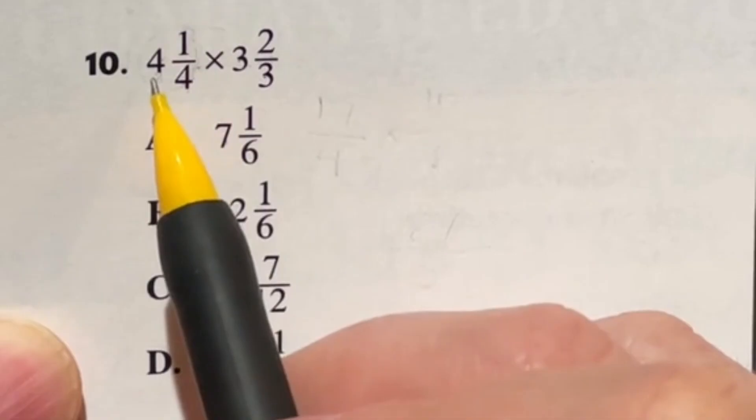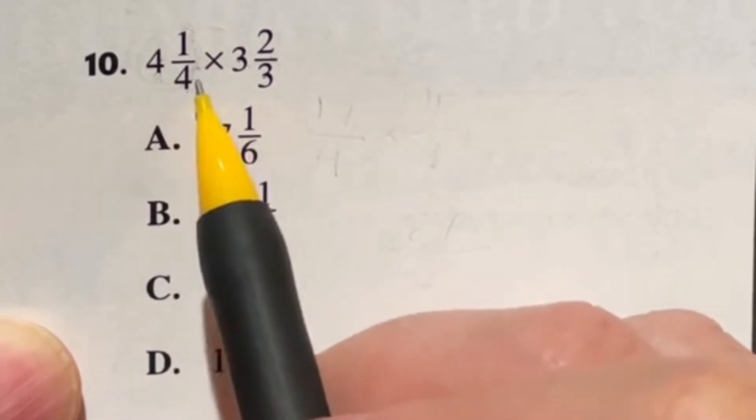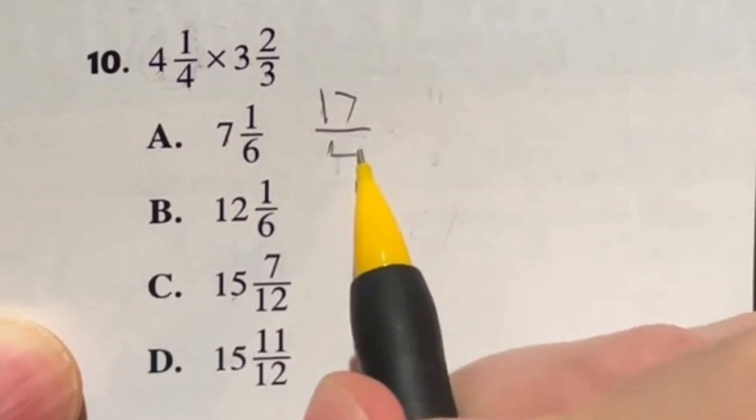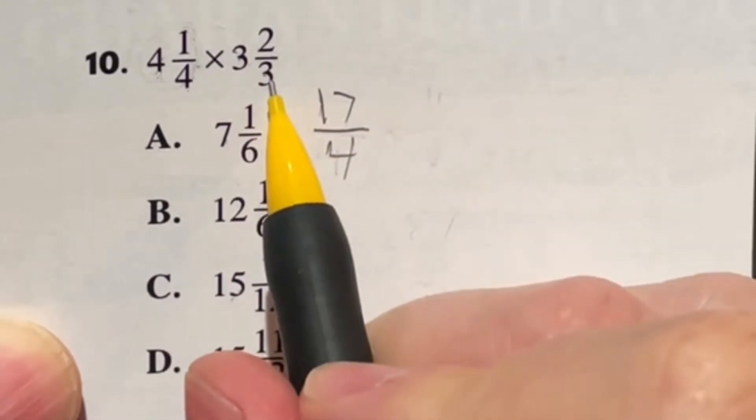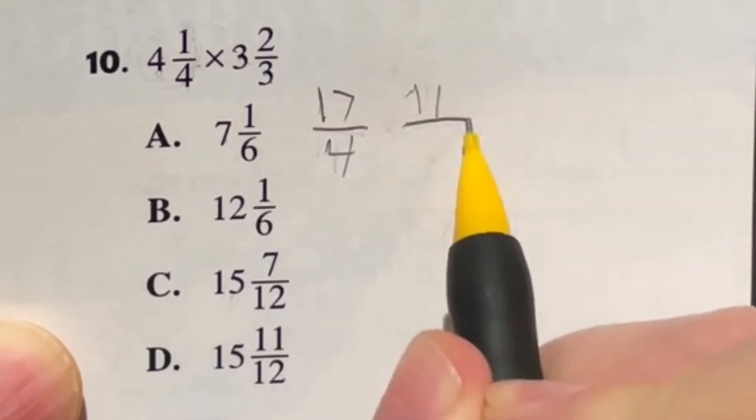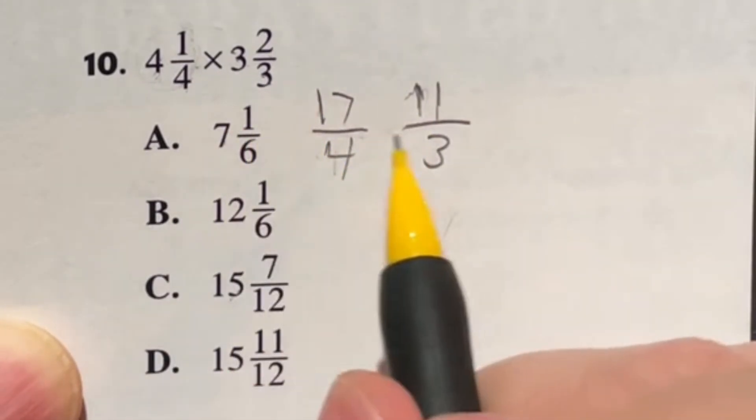So four times four is 16 plus that one is 17. So we put that on the top, we keep the four on the bottom. Three times three is nine plus two is going to give me 11 over three. Now, we have to do this because in order to multiply fractions, you multiply straight across with the fraction, which you can't do with those mixed numbers.